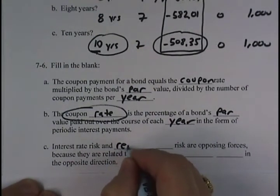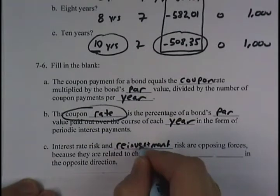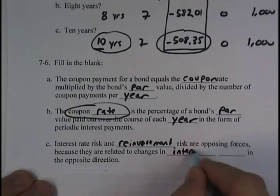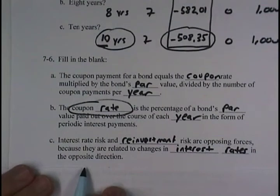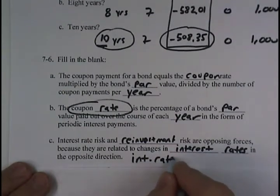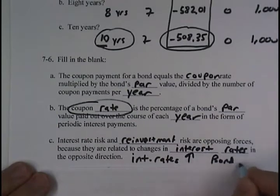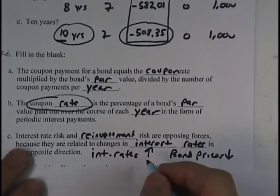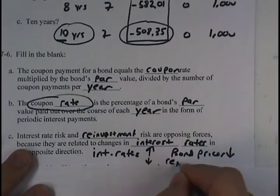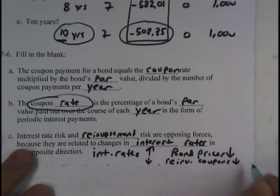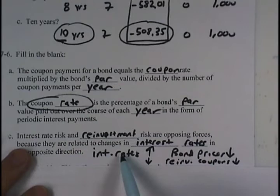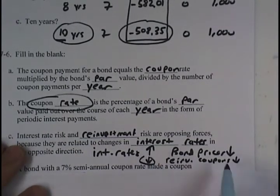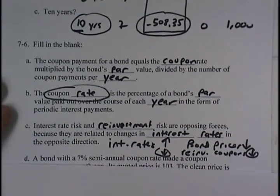Part C, interest rate risk and reinvestment risk are opposing forces because they are related to changes in interest rates in the opposite direction. In other words, when interest rates go up, bond prices go down, that is interest rate risk. But when interest rates go down, and I reinvest the coupons at a lower rate, that is reinvestment risk. So, in interest rate risk, prices are inversely related to interest rate changes. In reinvestment risk, the coupons are reinvested at whatever rate the prevailing rate is, so that's going to move the same way as interest rates and be opposite to that for interest rate risk.